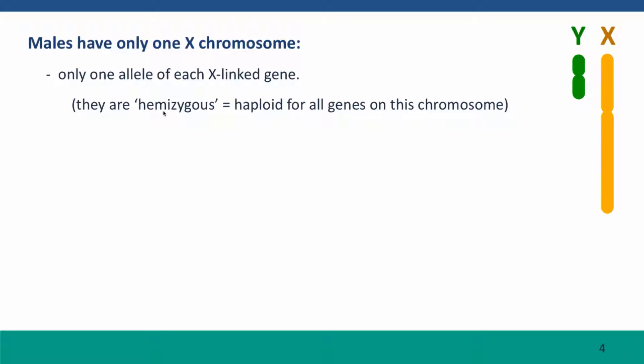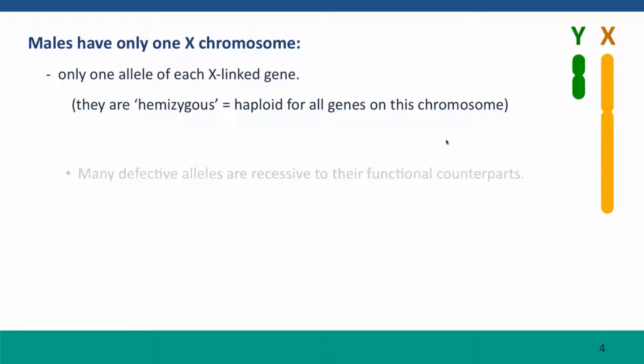Males have only one X chromosome, so they have only one allele of each X-linked gene. They're not diploid for these genes — they're haploid. We use the term hemizygous to refer to blocks of genes that are all present only in a single copy. We know from Module 3 that many defective alleles are recessive to their functional counterparts in diploid cells.